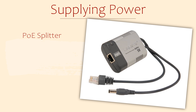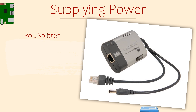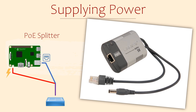Similar to an injector, you can also get a PoE splitter. This is where you have something providing power, but the device doesn't natively support being powered through PoE. For example, a Raspberry Pi — it has a power source that's separate to the network interface. A PoE splitter will separate the power from the data, allowing you to plug in both cables separately. The advantage is that you don't need a wall socket to power all your devices, even if they don't support PoE.